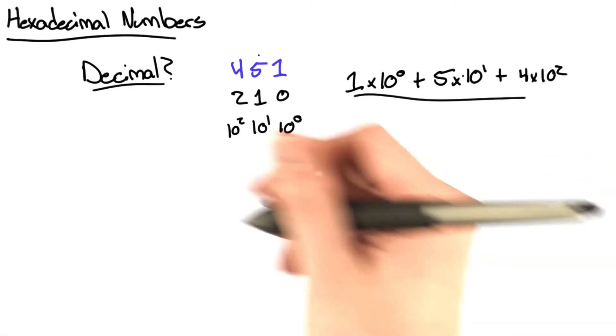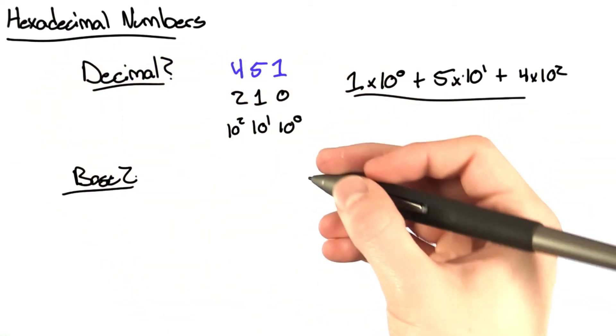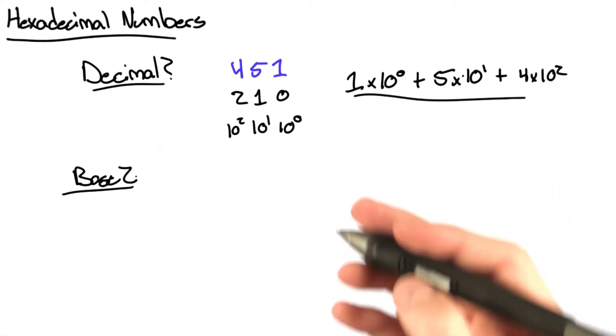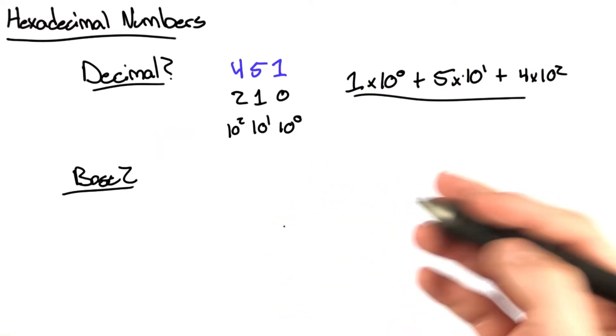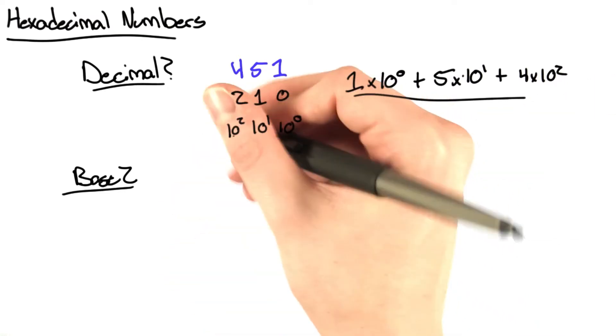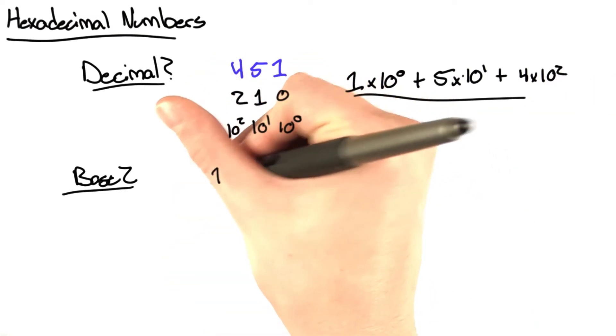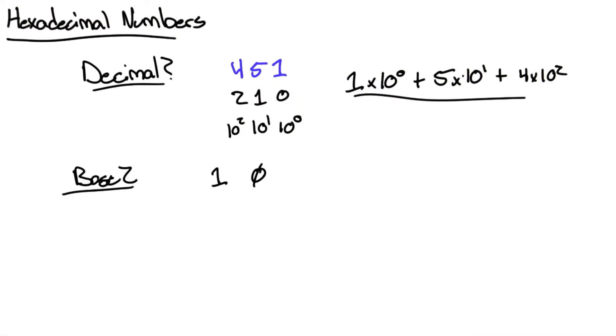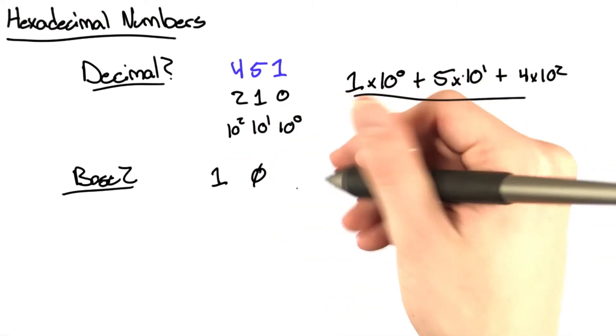In computer science, we often use base 2. And that's because the electronic circuits that we use in all our fun little computers are most easily designed with 2 states, on and off. And that's represented by a 1 or a 0.